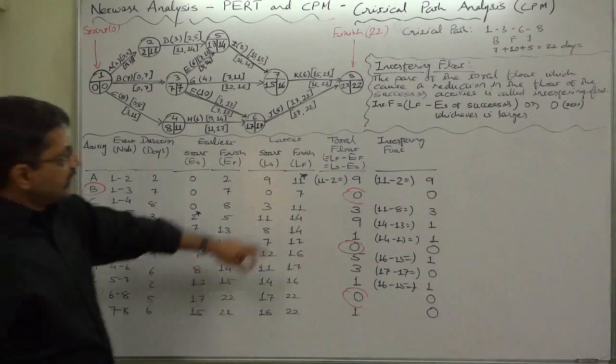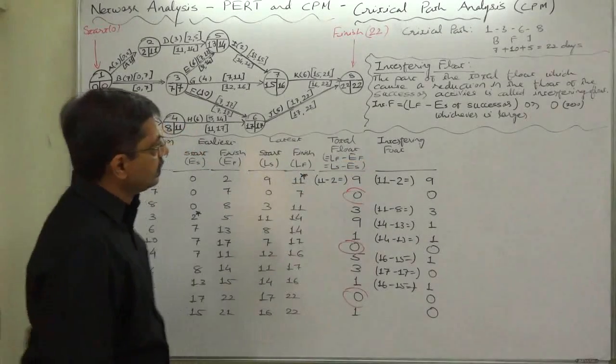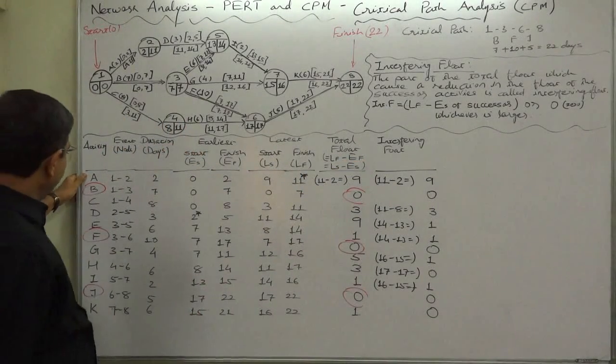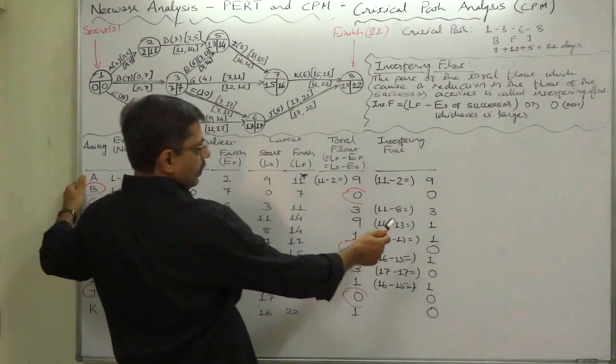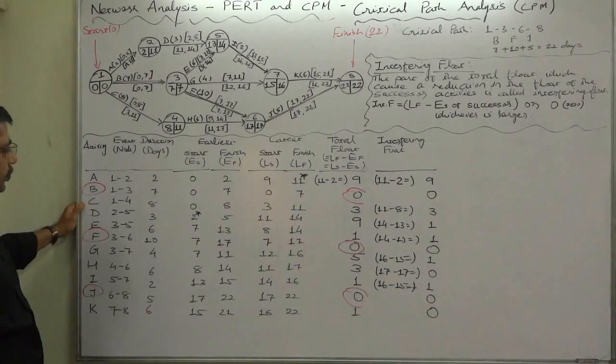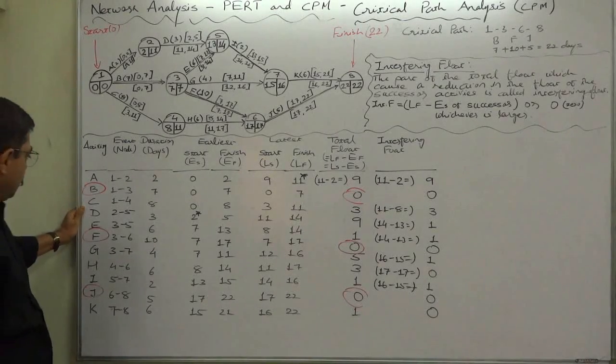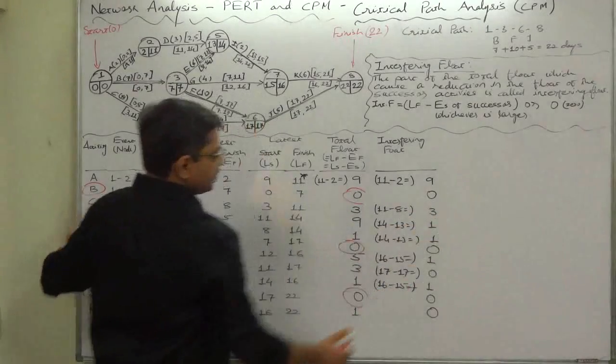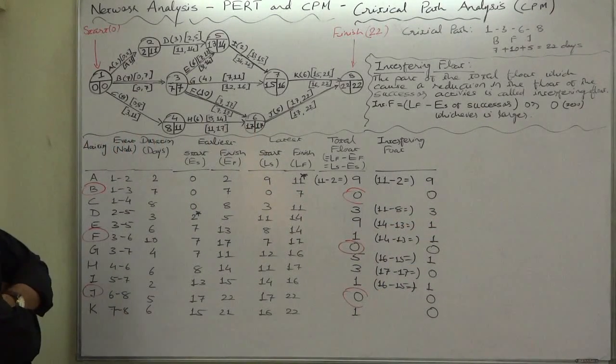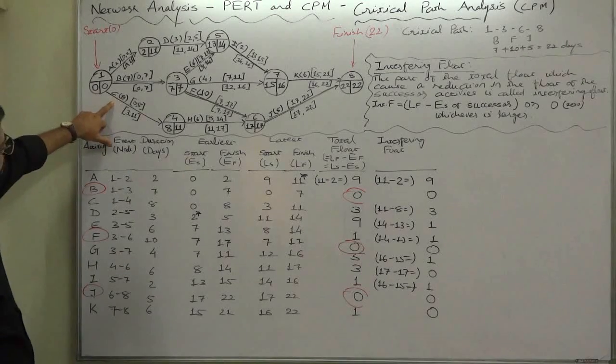So these are interfering floats. If we try to interpret this statistic: in case of A it is 9, in case of C it is 3. Let's take this 3. What is the interpretation of these 3 in case of C?